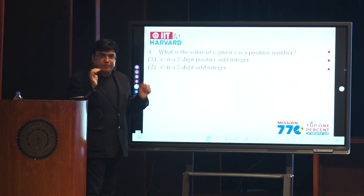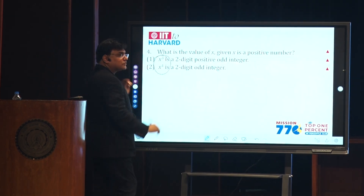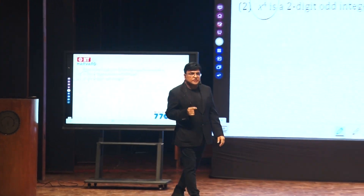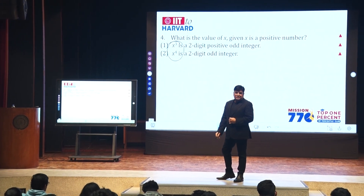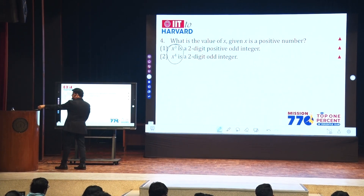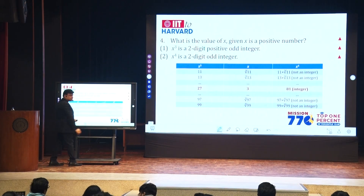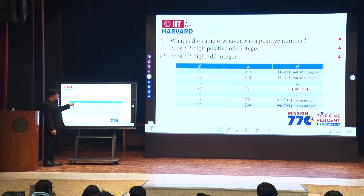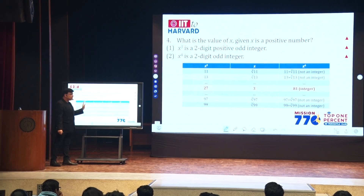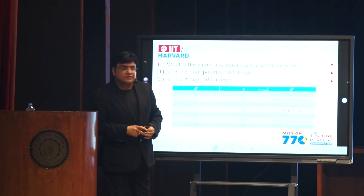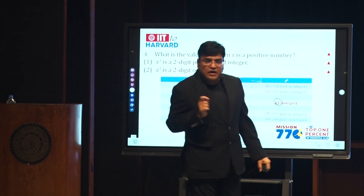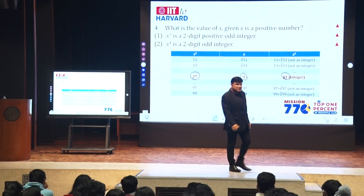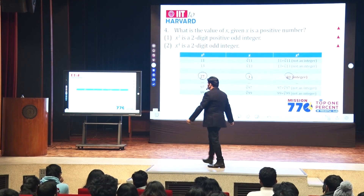Now when you combine, please pay attention — this will be tricky. If both x cubed and x to the fourth are integers, what must x be? Suppose x cubed equals 11; then x is the cube root of 11, and x to the fourth would be 11 times the cube root of 11 — that's not an integer. The only place where both x cubed and x to the fourth are integers simultaneously is when x equals 3. So after combining the two statements, x equals 3 is the only solution, and the correct answer is C.